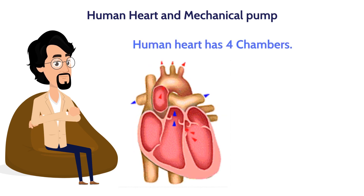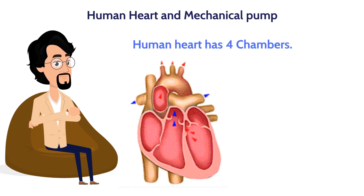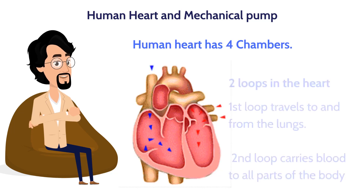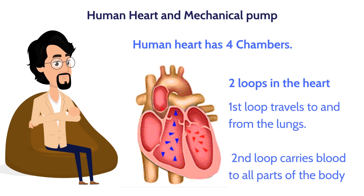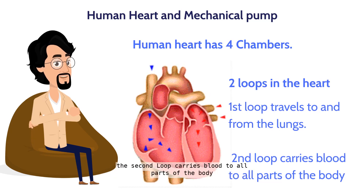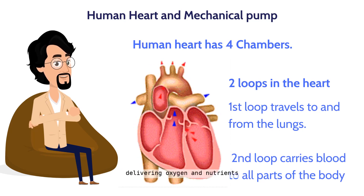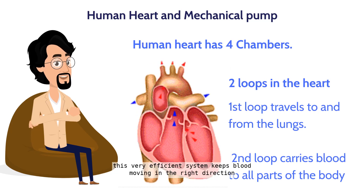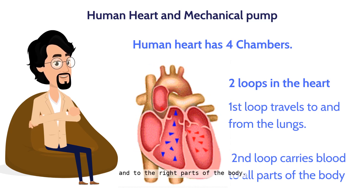In comparison, humans have a four-chambered heart — two chambers receive blood and the other two pump it out. Human hearts have two circulation loops: the first loop travels to and from the lungs, and the second loop carries blood to all parts of the body, delivering oxygen and nutrients. This very efficient system keeps blood moving in the right direction and to the right parts of the body.